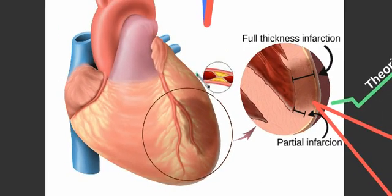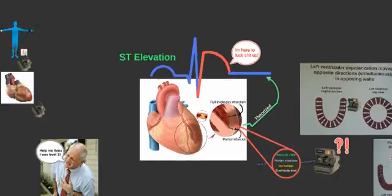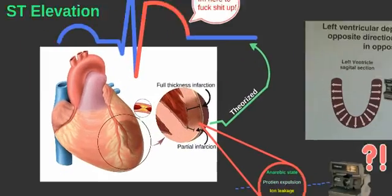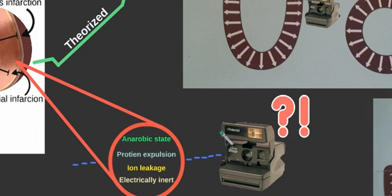We have a piece of artery, like the left anterior descending right here, that's hitting this lateral wall and it's occluding, and it's causing cellular damage to happen right here. There's something important about this cellular damage that happens. When we have cellular damage in this anaerobic state, we are not getting oxygenation down there, we are not getting perfusion down there. What happens? We have protein expulsion, we have ion leakage, and the cell becomes electrically inert.